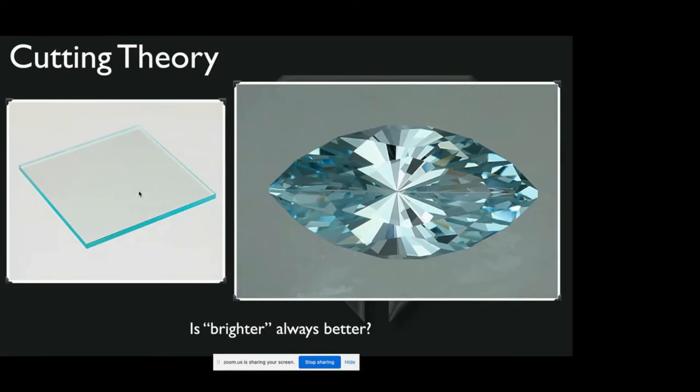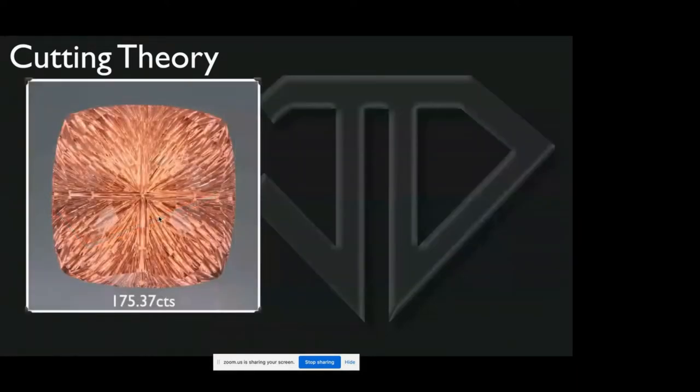That is why, by the way, many fancy yellow diamonds you will see are cut in a radiant style cut. It's not the most brilliant but it has a longer light path or can have, depending upon the cutting style.